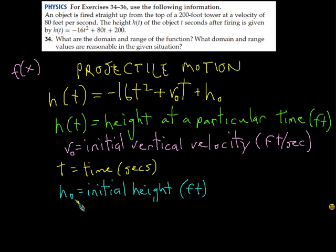h sub zero is the initial height. Just like v sub zero, it's also pronounced h naught. And the little sub zero, the little zero here, means the height at time equals zero. And the height is measured in feet.